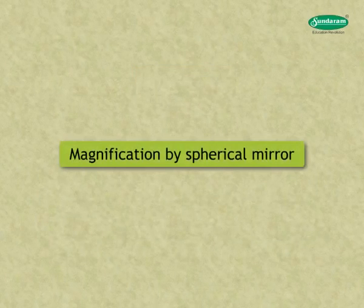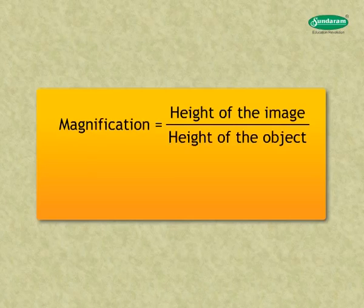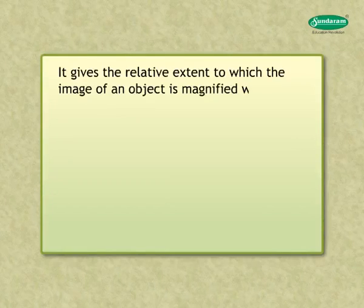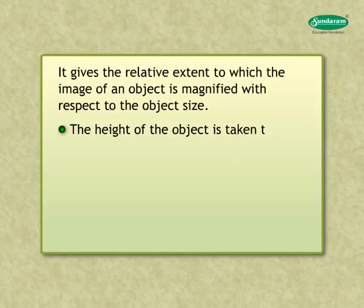Magnification: Magnification produced by a spherical mirror is expressed as the ratio of the height of the image (h2) to the height of the object (h1). It gives the relative extent to which the image of an object is magnified with respect to the object size. The height of the object is taken to be positive as the object is usually placed above the principal axis.